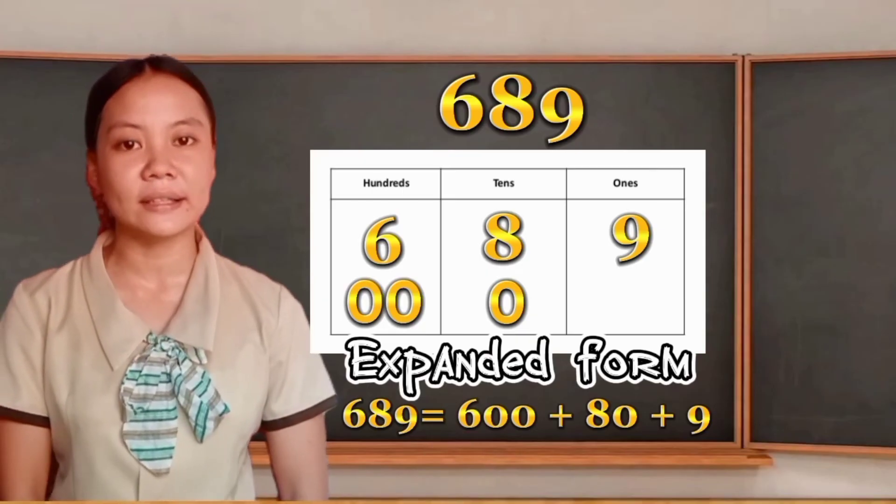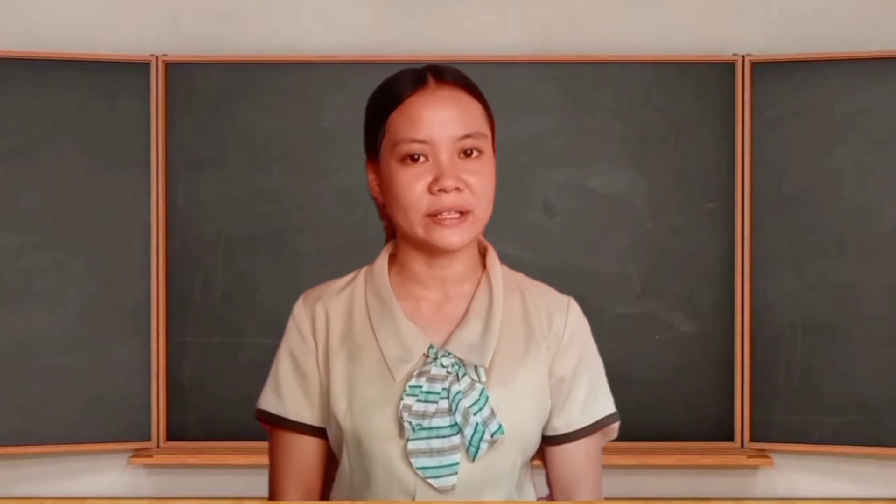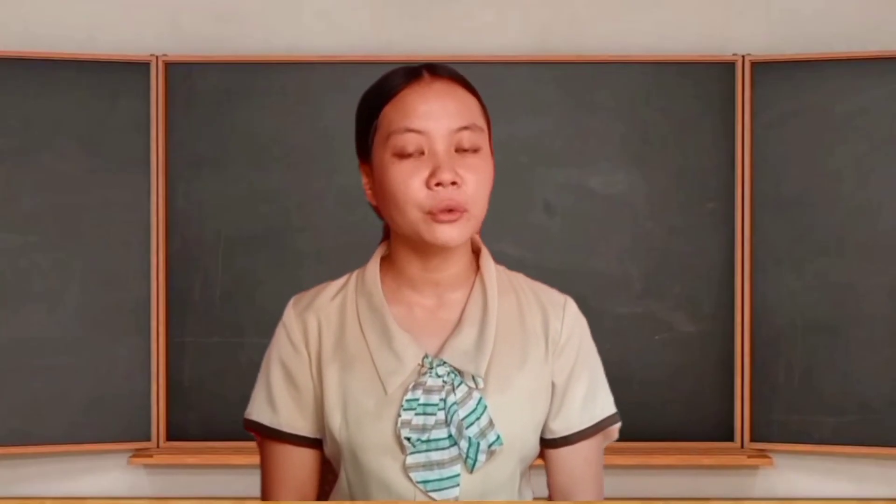Now, did you understand it, class? Okay, very good. I think, class, that you are ready to answer your activities. This activity will be in groupings — I will divide the class into 2: Group 1 and Group 2. Here are the instructions: I will say the three-digit number, and each member of your group will come in front and write the expanded form of the number I give. The group that gets the most correct answers first will be considered the winner. Are you ready, class? Okay, let's start.